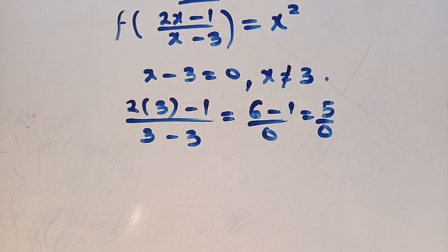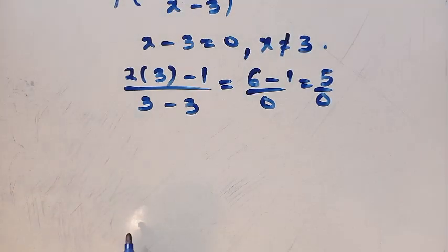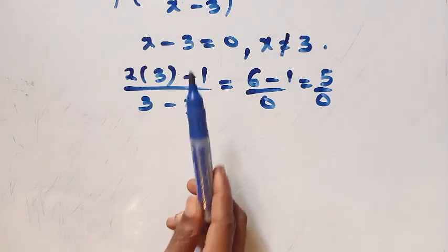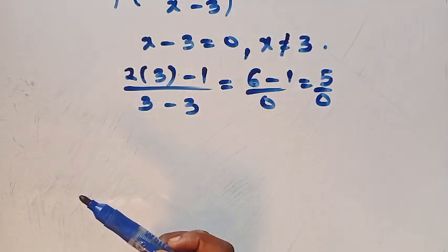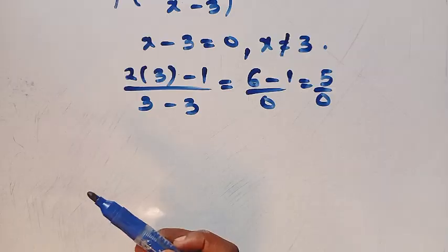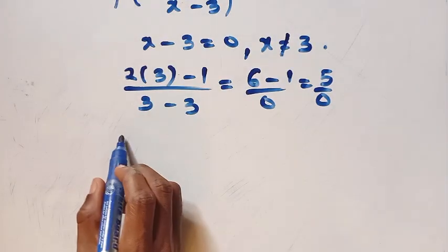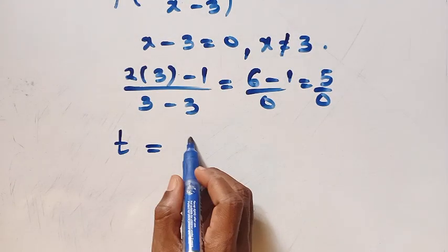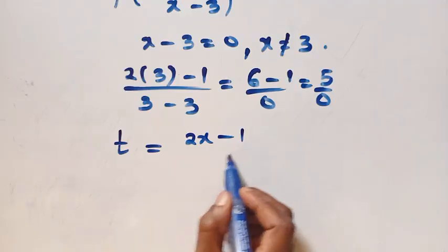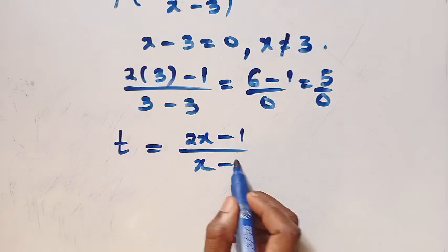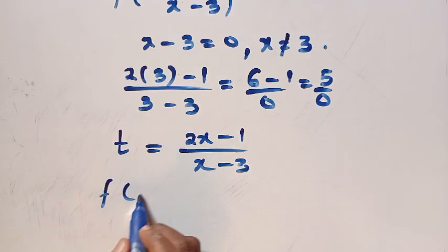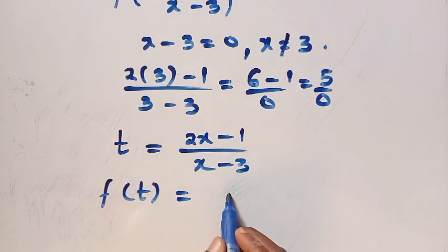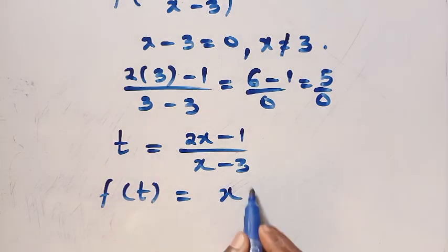Now let's solve this by applying the substitution method. We are going to substitute every single value of x — replacing everything with t. Let's say we let t equal (2x minus 1) over (x minus 3). Then the function becomes f of t equals x to the power of 2.